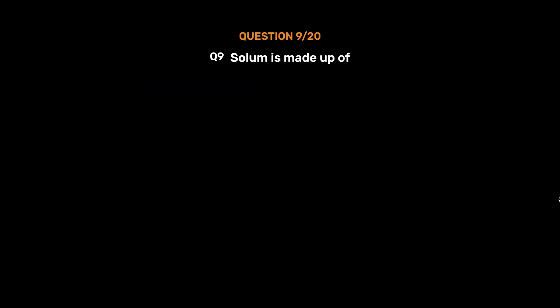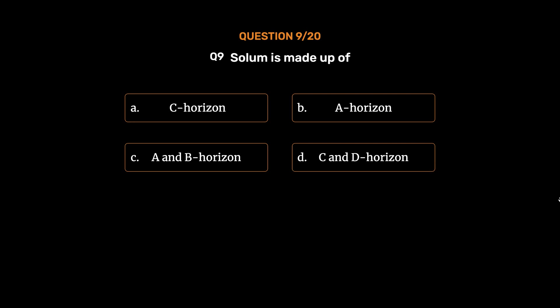Question number 9. Solum is made up of: option A, C-horizon; option B, A-horizon; option C, A and B-horizon; option D, C and D-horizon. The correct answer is option C, A and B-horizon.